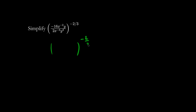Let's clean up the inside first. We have something to the negative 2 thirds. We have negative 16 divided by 2, which is negative 8, the same thing as negative 2 cubed. As for the x's, we have negative 2 plus 3, which is x to the 1 on the numerator. We cancel out a y on the top and bottom, leaving y squared on the bottom.